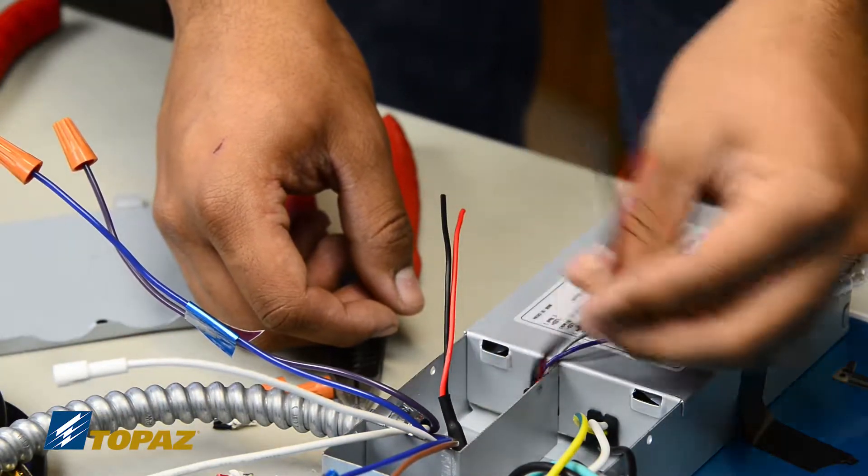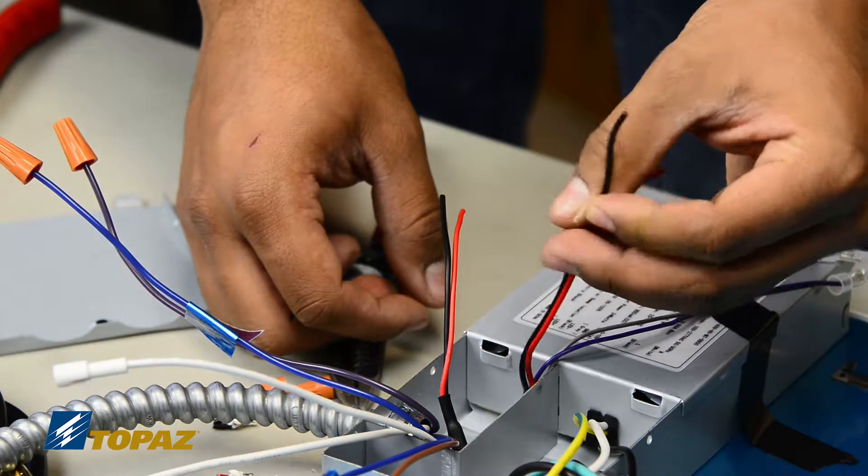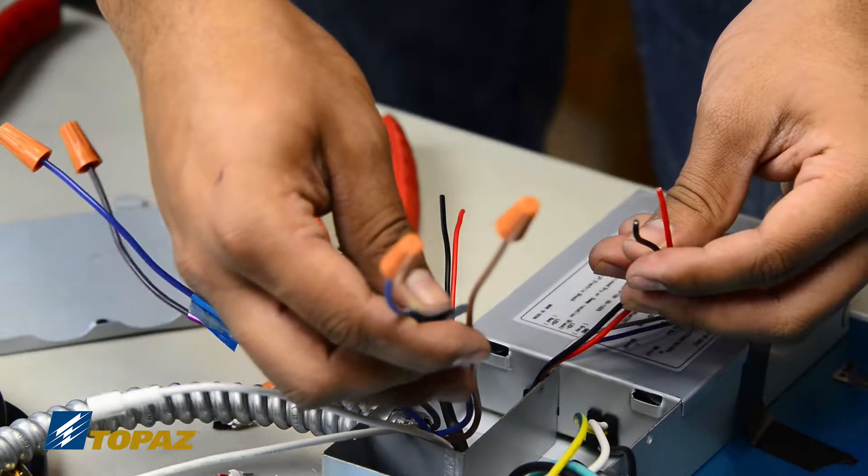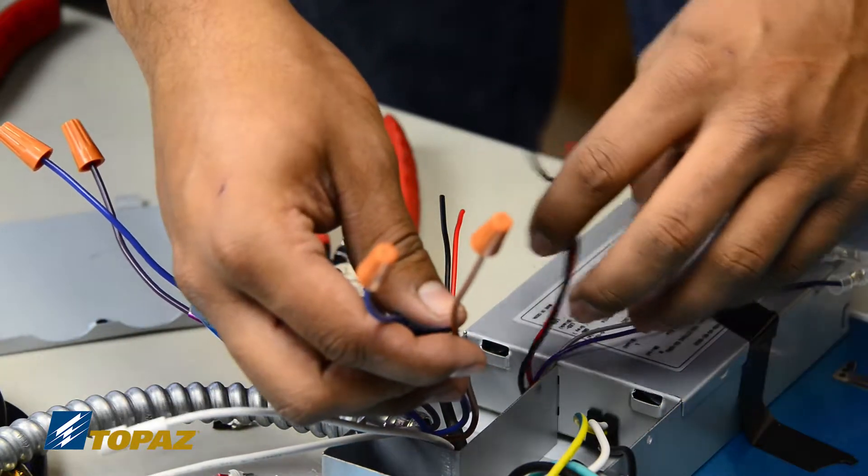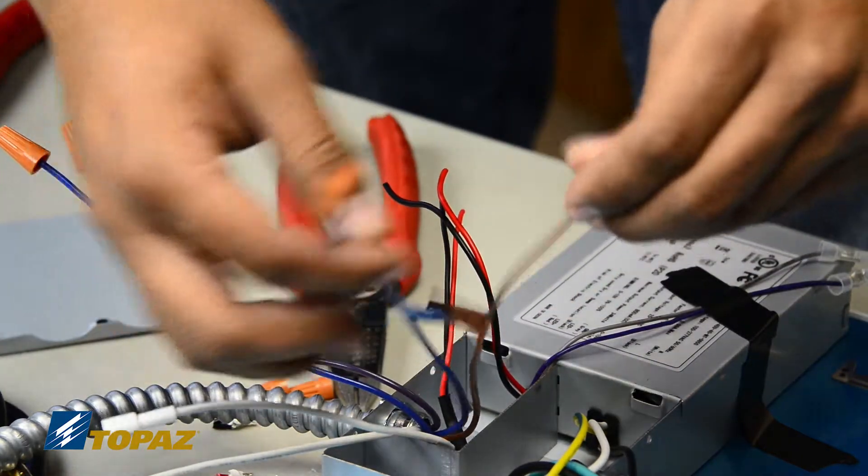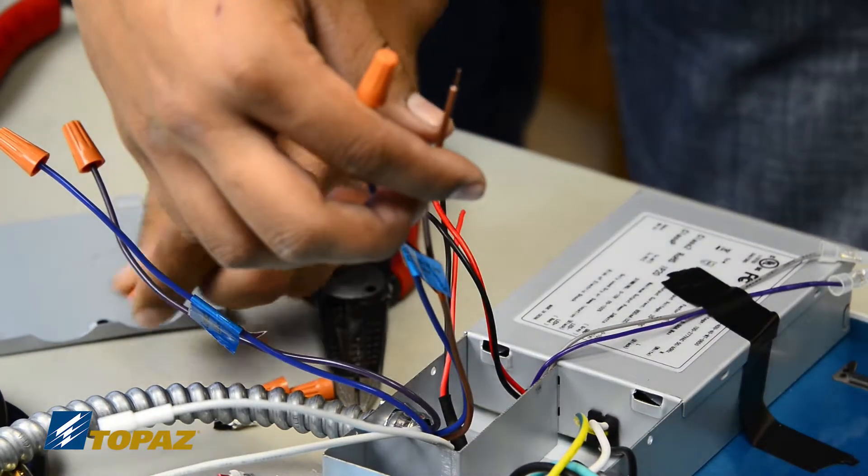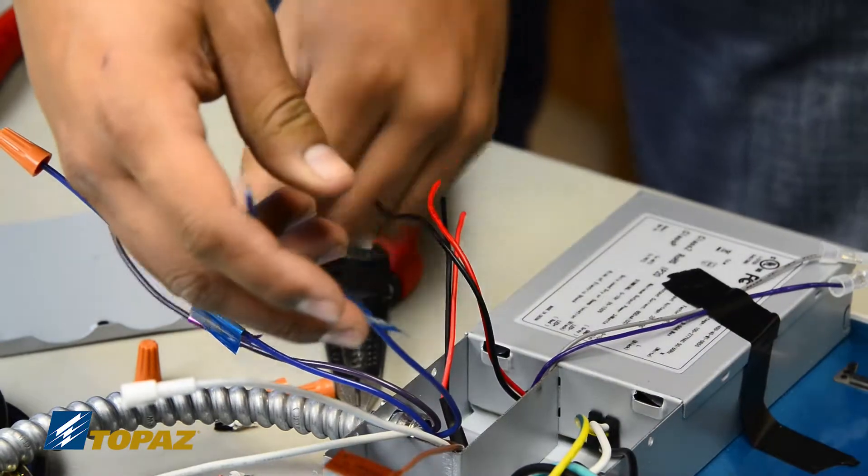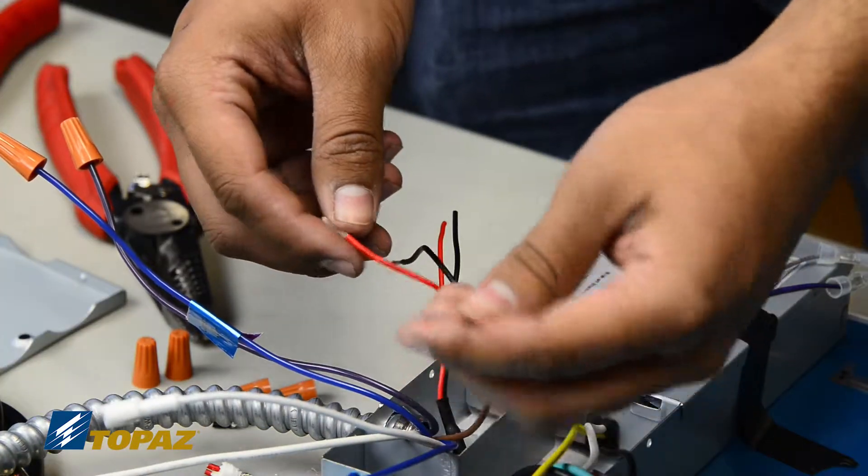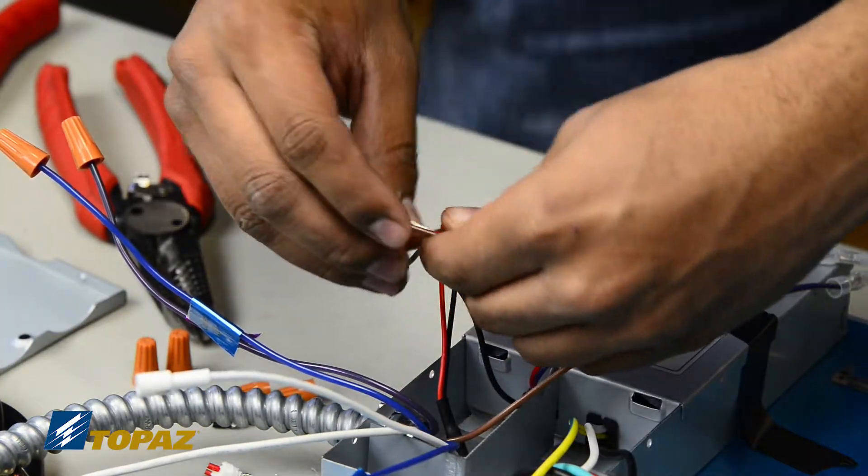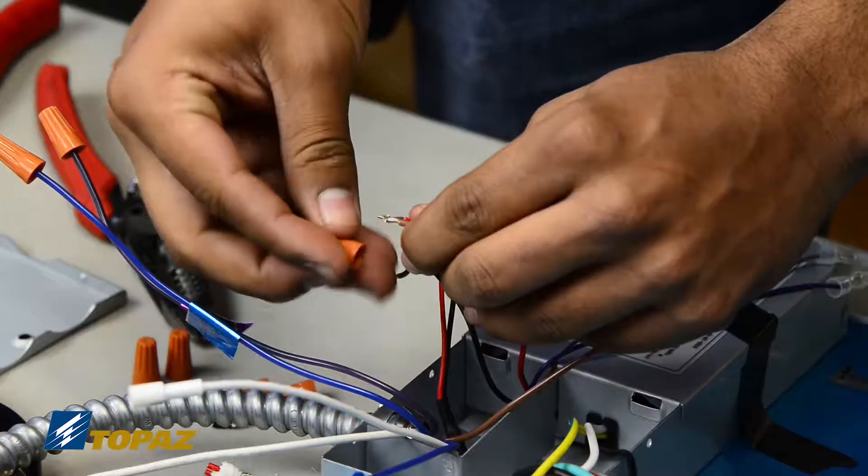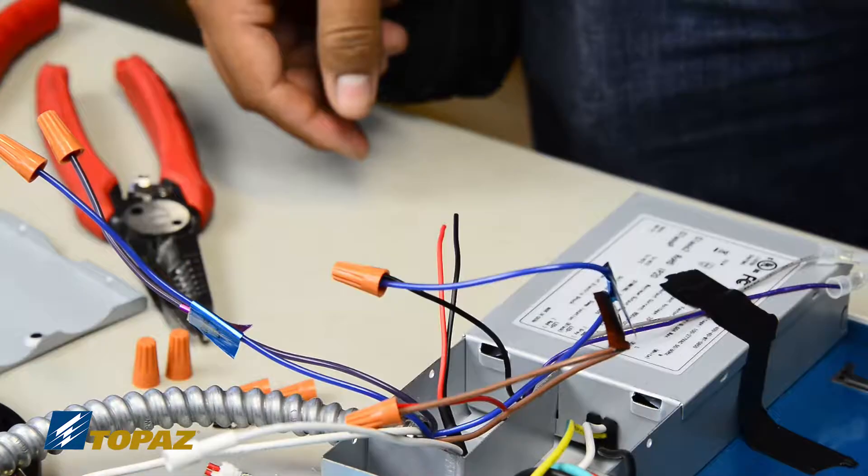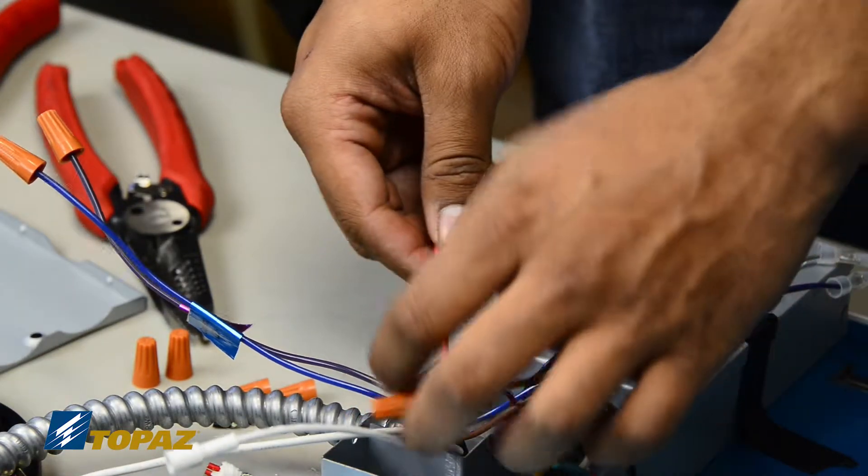We'll start with the LED driver leads, the black and red. We're going to now pair it up with the tags that came with the backup ballast. You'll notice that the tags are identified as LED driver with a positive and a negative marking. Red will be going to the positive and black will be going to your negative. We're going to connect the positive lead first, now we do the negative lead.